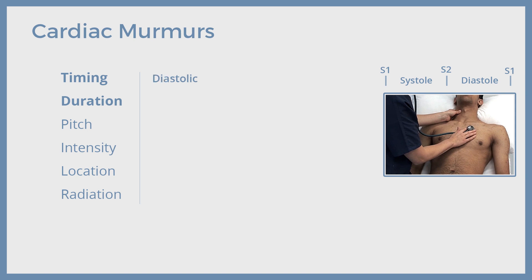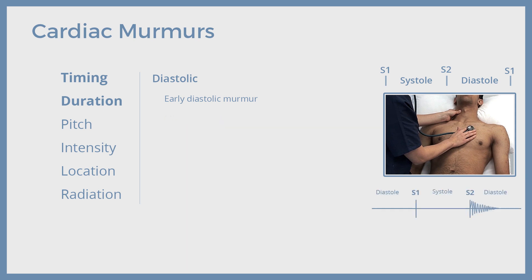Coming to diastolic murmurs — we have three types: early diastolic, mid-diastolic, and late-diastolic murmurs. Early diastolic murmur starts just with the second heart sound. This murmur is heard in aortic insufficiency or rare pulmonary regurgitation. During diastole, the aortic and pulmonary valves are closed to prevent the backflow of blood into the ventricles. But valve insufficiency cannot prevent this backflow of blood across the valve during diastole, and the early diastolic murmur is heard.